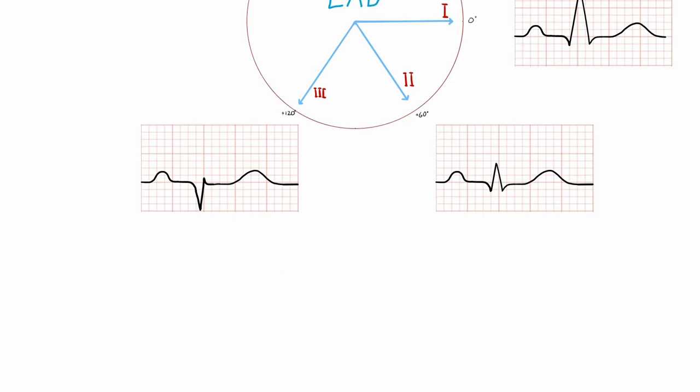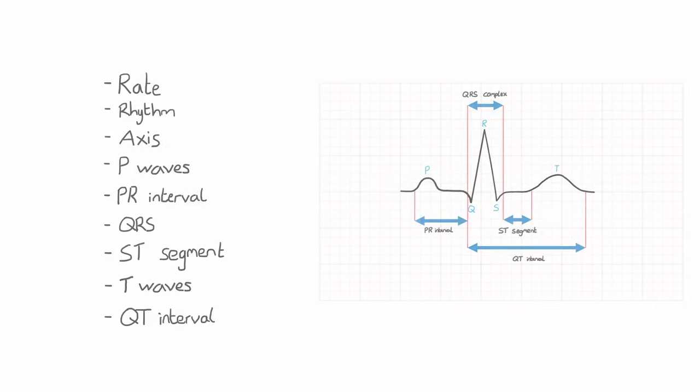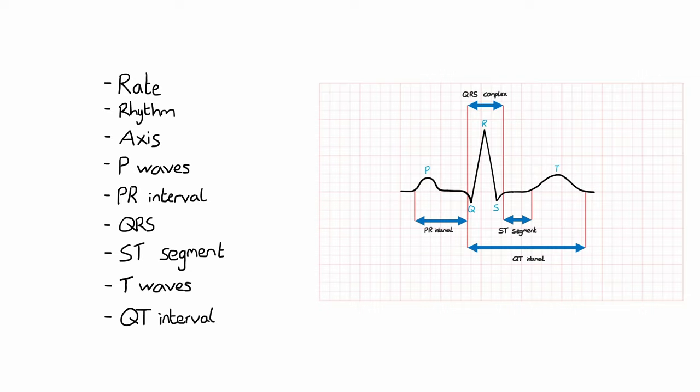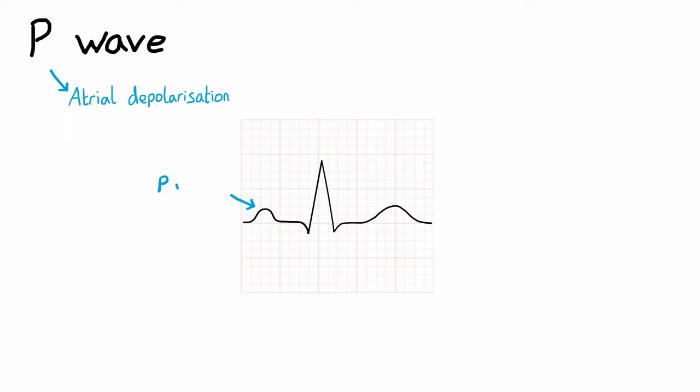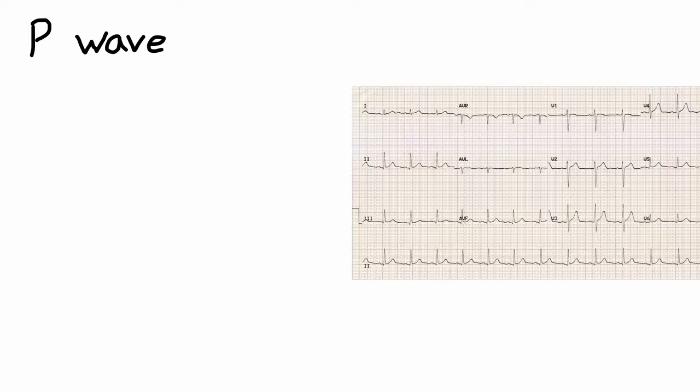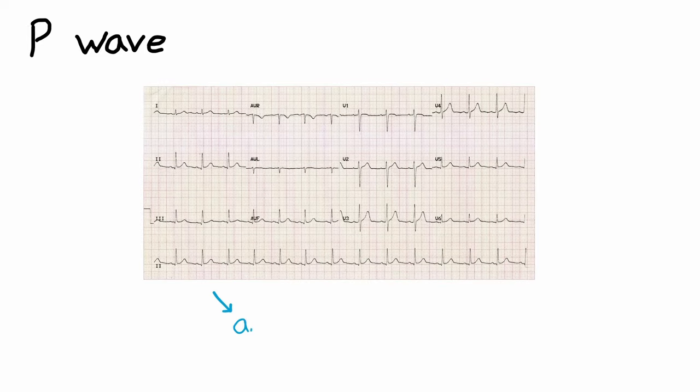From now on in the interpretation we're assessing individual components of the ECG complex, and it's therefore important to assess these components in all 12 leads of the ECG to avoid missing any abnormalities. First off is the P wave, which represents atrial depolarization. The questions we need to ask ourselves here are: Are P waves present and do they look normal? Remember we need to be checking this in all 12 leads.